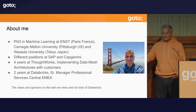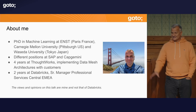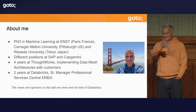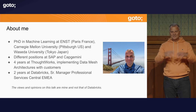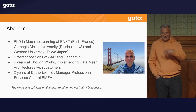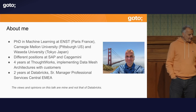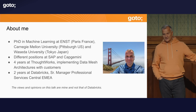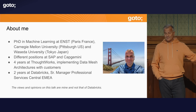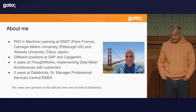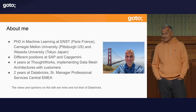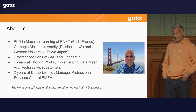My name is Christoph. I made my PhD in machine learning — that's a long time ago. The mathematics 20-30 years ago was exactly the same: gradient descent, backpropagation. Just the number of neurons and the data was much smaller. It's amazing what you can achieve today with the same mathematics by just adding more units, neurons, and data. I then went into industry, worked for SAP, Capgemini, and joined ThoughtWorks, where I worked together with Zhamak Dehghani, who invented data mesh. Since two years I'm a senior manager for professional services at Databricks, helping customers build big data architectures.